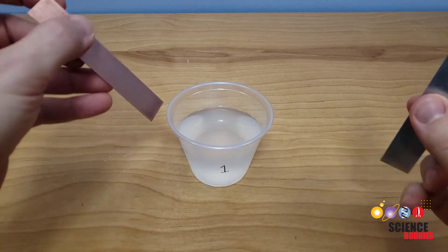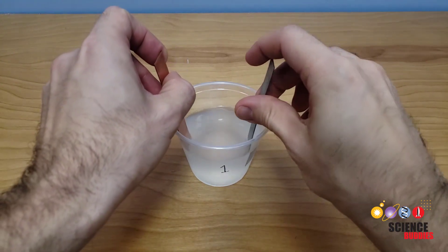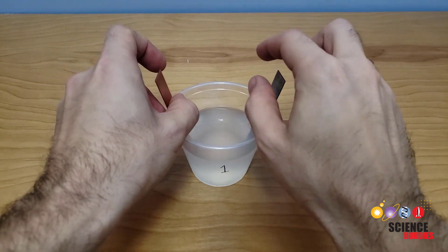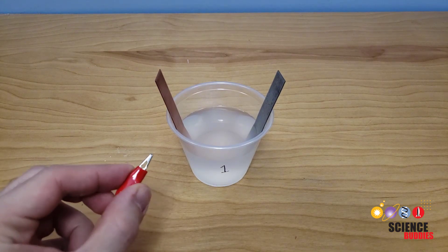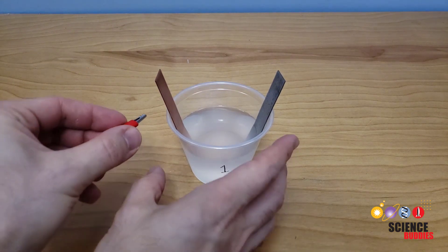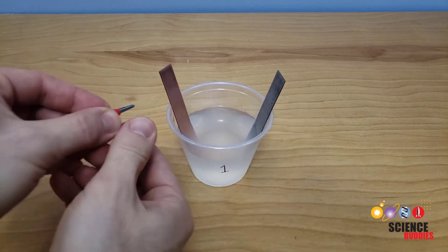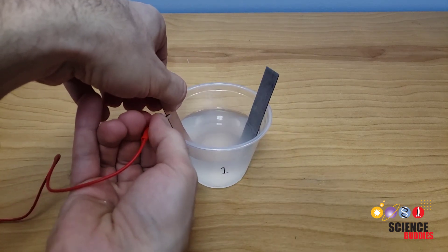Next take your two electrodes and place them in the opposite sides of the cup and make sure they are not touching. You can secure them to the sides of the cup using the alligator clips. Take the red alligator clip and connect it to the copper and then the green alligator clip and connect it to the zinc.